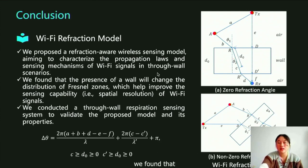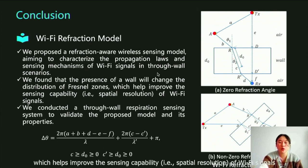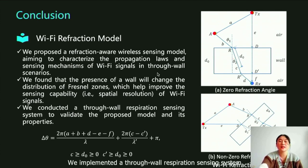We found that the presence of a wall will change the distribution of Fresnel zones, which helps improve the sensing capability of Wi-Fi signals. We conducted a through-wall respiration sensing system to validate the proposed model and its properties. That's all. Thank you.